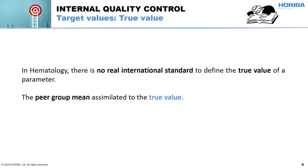In hematology, there is no real international standard to define the true value of a parameter. So we are considering the peer group mean as assimilated to the true value, because it may include a bigger number of values to calculate the mean than the other target values.